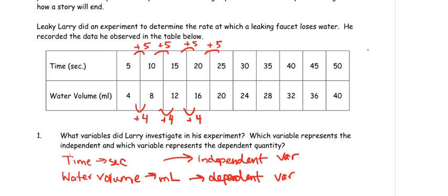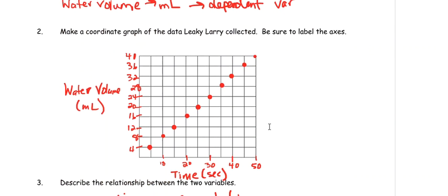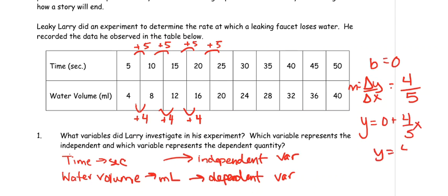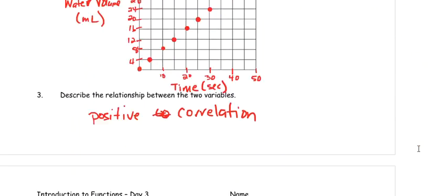Now your b, when you're looking at the graph, b is the y-intercept, meaning where is this line going to cross the y-axis? At zero time, there is no water. So your b is going to be zero. And your m is your rate of change, which is change in y over change in x. Change in y is four, and change in x is five. So, your equation for this is going to be y equals four-fifths x. This is really important to get these answers.